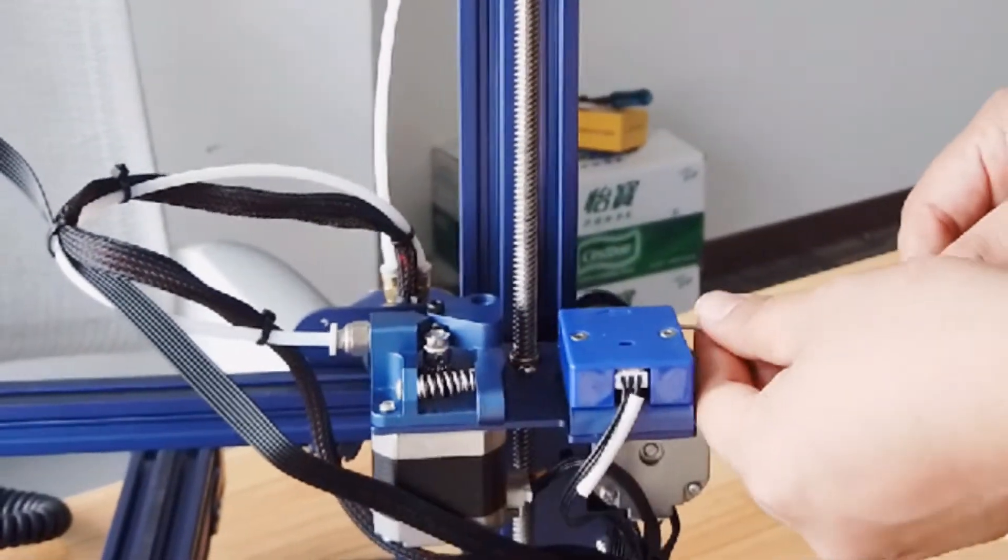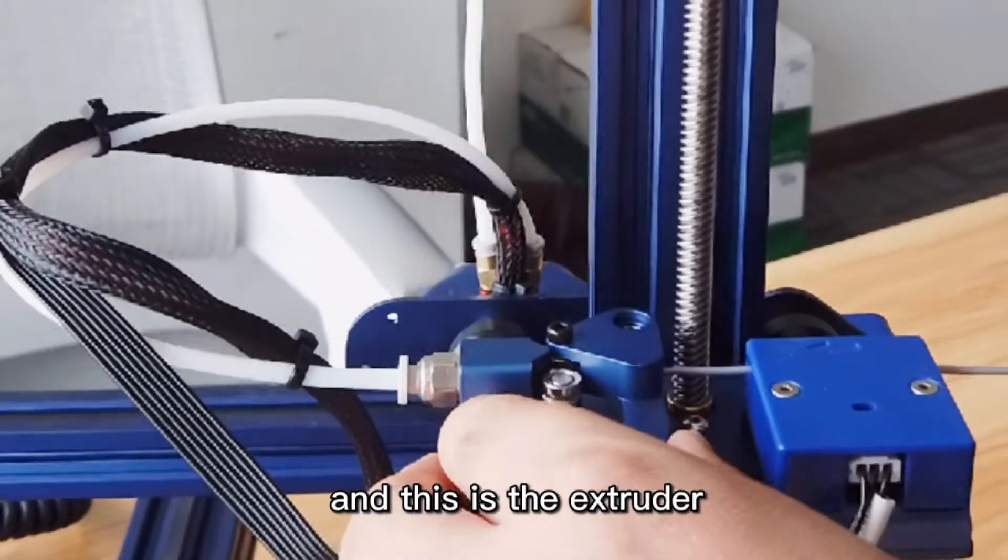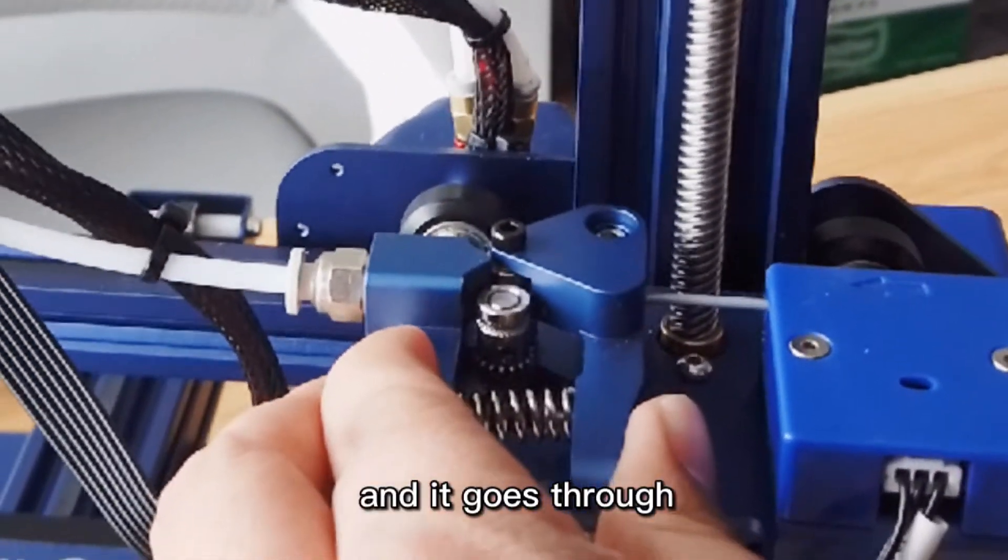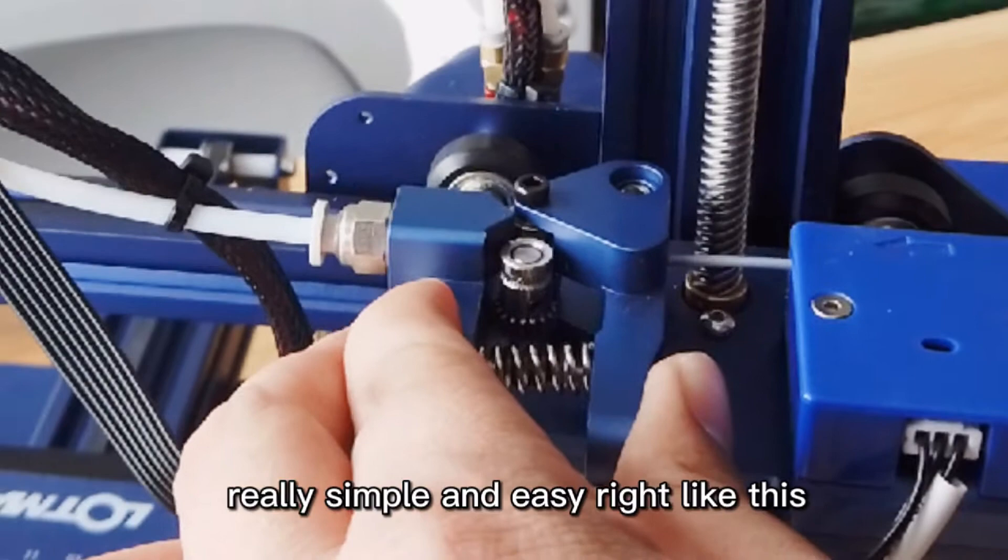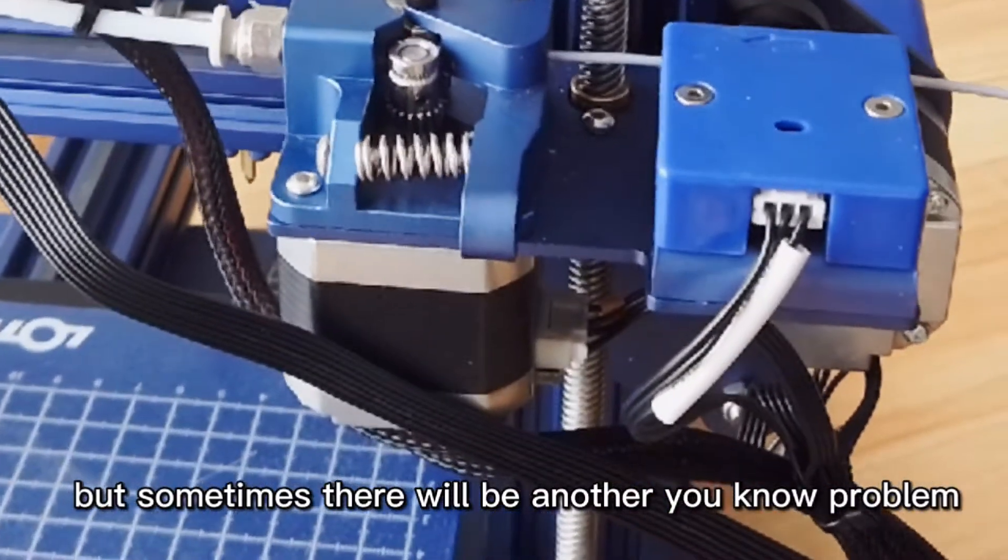And this is the sensor. It goes through. And this is the extruder. And I'm going to press this one. And it goes through really simple and easy, right? Like this. But sometimes there will be other problems.